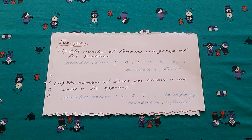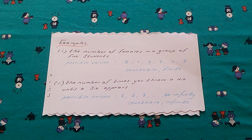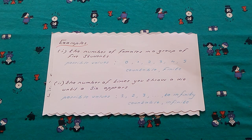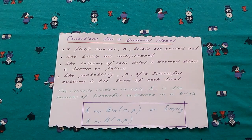The second example is the number of times we throw a die until a six appears. The possible values are 1, 2, 3, to infinity, since we don't know exactly how many times we'll throw the die before getting a six. Hence this is an example of countably infinite.